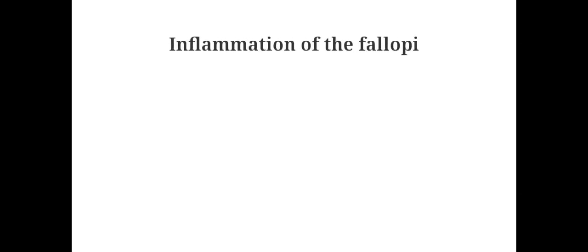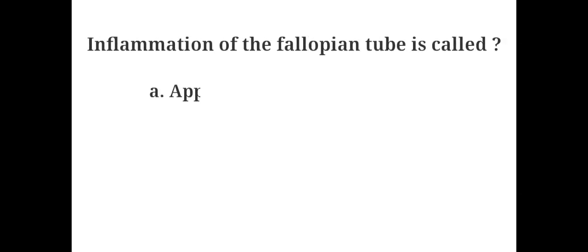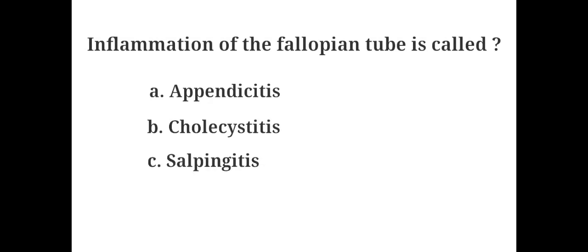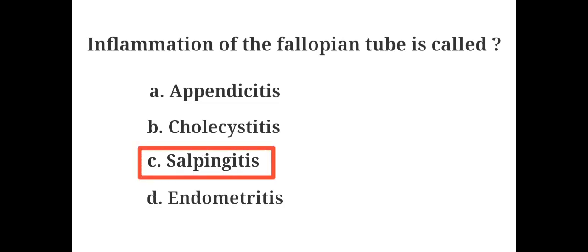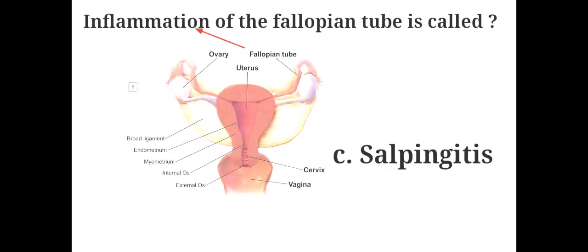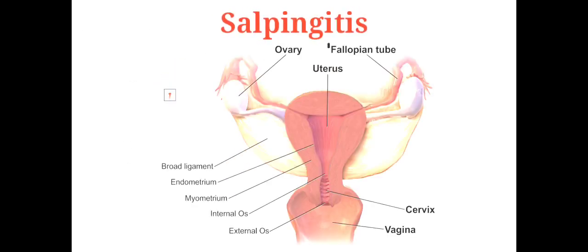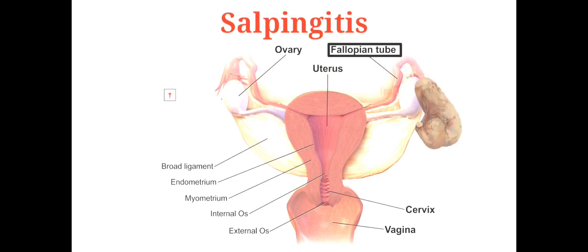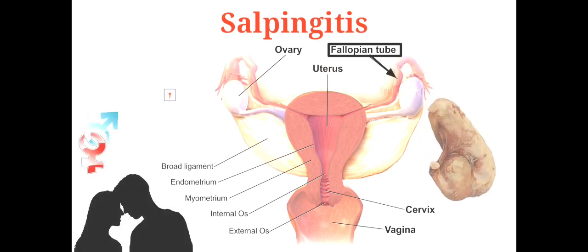Inflammation of the fallopian tube is called: A. Appendicitis, B. Cholecystitis, C. Salpingitis, D. Endometritis. The answer is C. Salpingitis. Salpingitis is caused by bacterial infections. Common causes include sexually transmitted diseases such as gonorrhea and chlamydia.